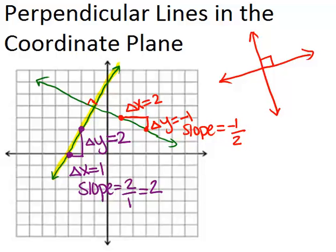So if we look at these two resulting slopes, we have negative 1 half and positive 2, or positive 2 over 1. This shows the general relationship between the slopes of perpendicular lines. The slopes are always going to be opposite reciprocals.